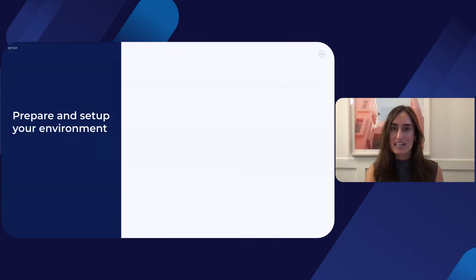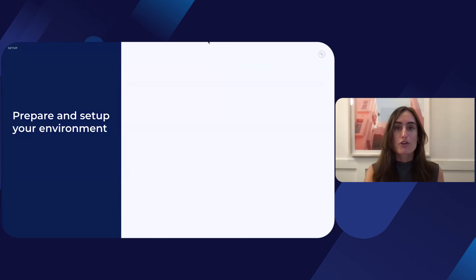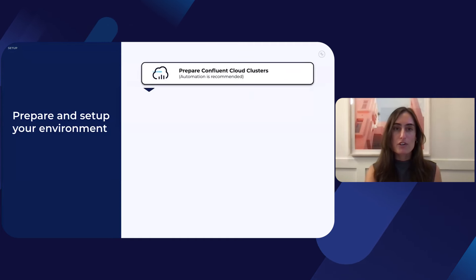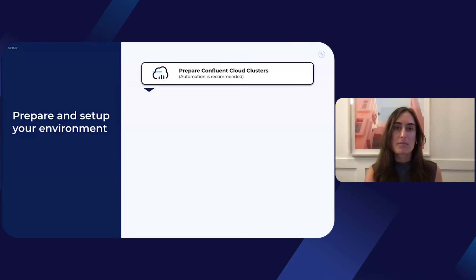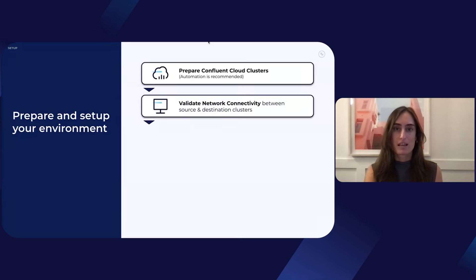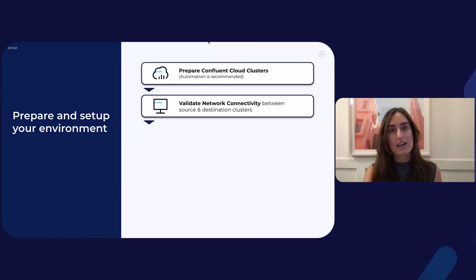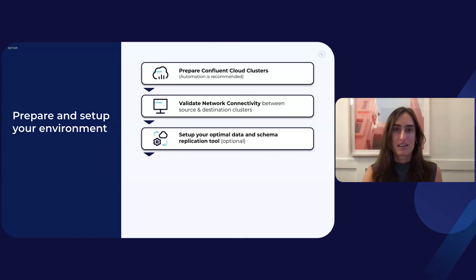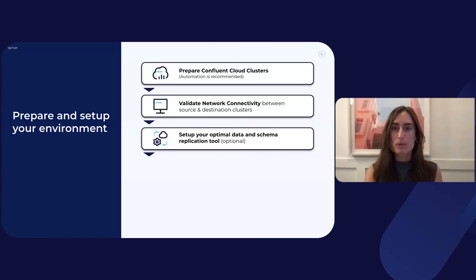Alright, so now that we've discussed how you can plan for your migration, let's cover how you should set up your environment. Your first step is going to be to create your Confluent Cloud clusters — select the cluster type, networking, and region determined in the planning phase. Next, validate the networking connectivity between the client and Confluent Cloud resources. If you are replicating historical data, also check the connectivity between the source and destination clusters. After validating the connectivity, if you are replicating historical data, set up the replication tool you chose during the planning phase.